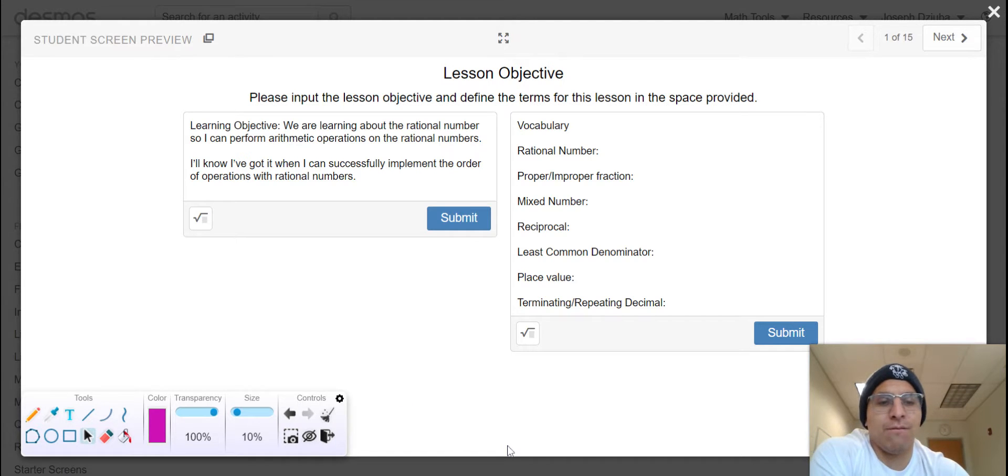So on the right hand side we can see that we have a full slate of vocabulary and we will be learning about the rational numbers so I can perform arithmetic operations on the rational numbers. I'll know I've got it when I can successfully implement the order of operations with rational numbers. Let's see it.